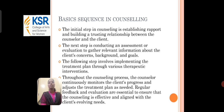The basic sequence in counselling: the initial step is establishing rapport and building a trusting relationship between the counsellor and the client. The next step is conducting an assessment or evaluation to gather relevant information about the client's concerns, background, or goals. The following step involves implementing the treatment plan through various therapeutic interventions. Throughout the counselling process, the counsellor continuously monitors the patient's progress and adjusts the treatment plan as needed. Regular feedback and evaluation are essential to ensure counselling is effective and aligned with the client's evolving needs.